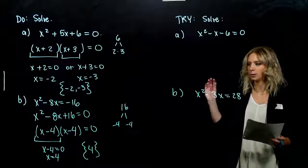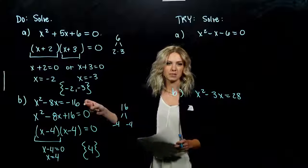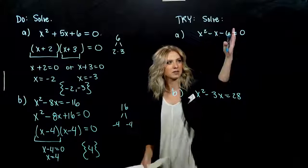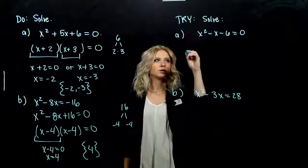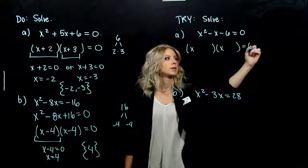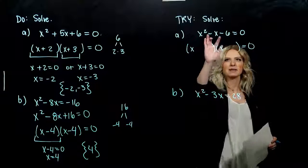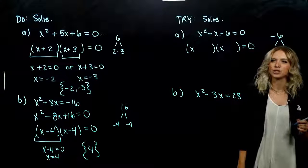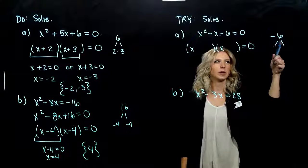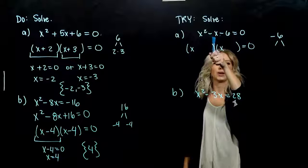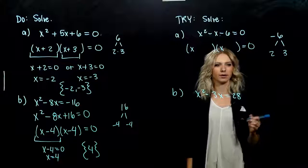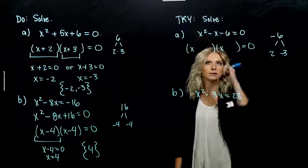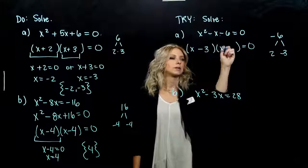What should you do in the end? Plug it back into the original and check. For the next practice problem, Part A: everything is already on one side equal to 0, so we can factor. There's a 1 out on the front, so it's going to be an x and an x. I've got a negative-negative, so I need some combination of negative and positive. We need to break up negative 6 into things that multiply there and add to negative 1 — so things close together, with the bigger one being negative.